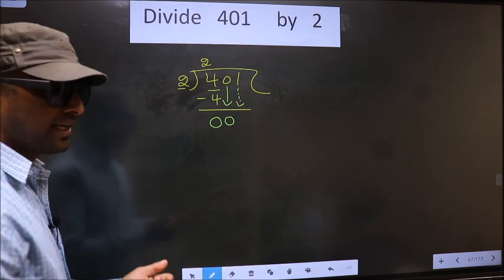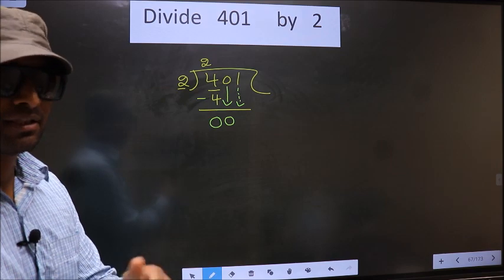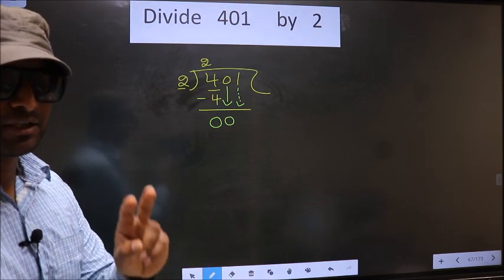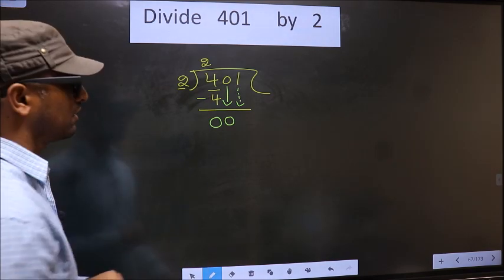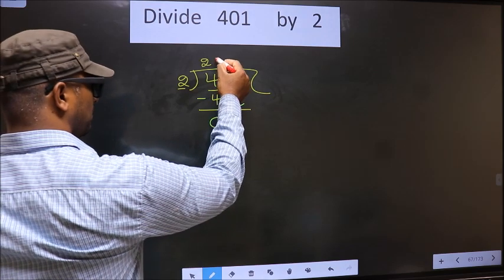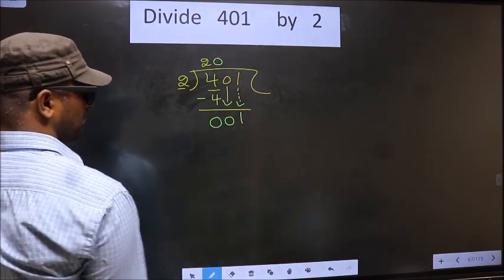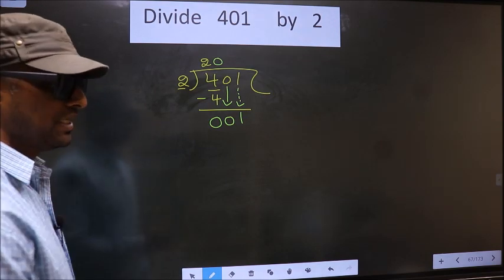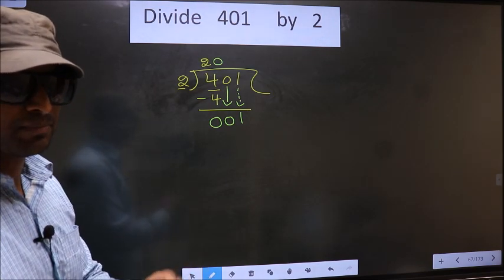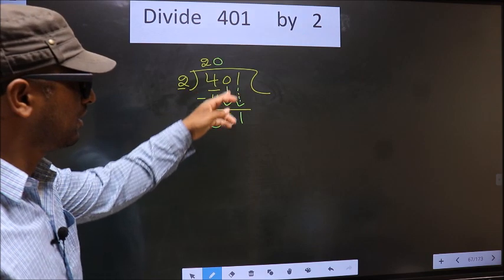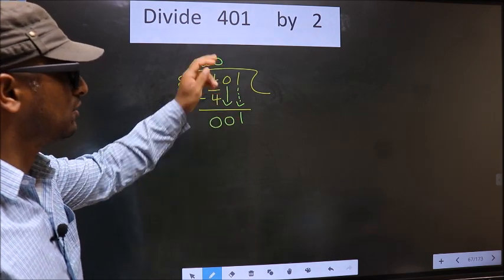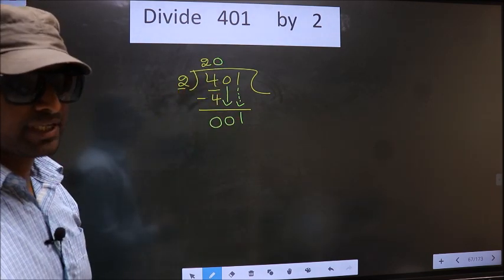At a time, you cannot bring down 2 numbers. If you intend to bring 2 numbers down, you should compulsorily put 0 here to bring down the second number. I repeat. Whenever you intend to bring 2 numbers down, you should put 0 here. Okay. Next.